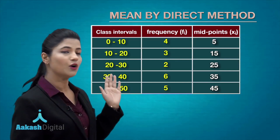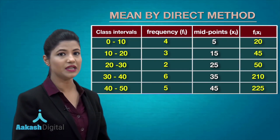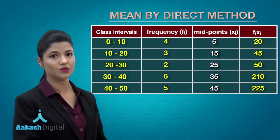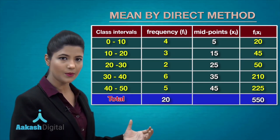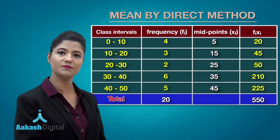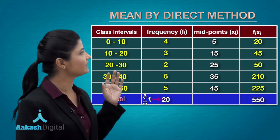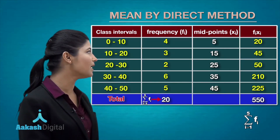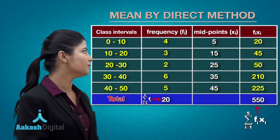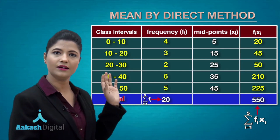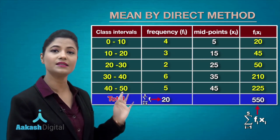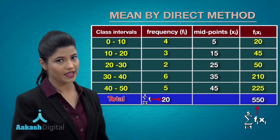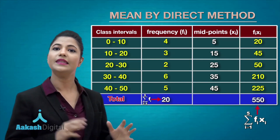Then you take the product of fᵢ with xᵢ for each and every class, computing fᵢxᵢ for each class. After that, you take the sum total of all the frequencies, denoted by Σfᵢ, and also the sum total of all fᵢxᵢ, denoted by Σfᵢxᵢ. In both cases i is from 1 to n, where n represents the last class — here we have five classes, so this is Σfᵢxᵢ for i = 1 to 5.